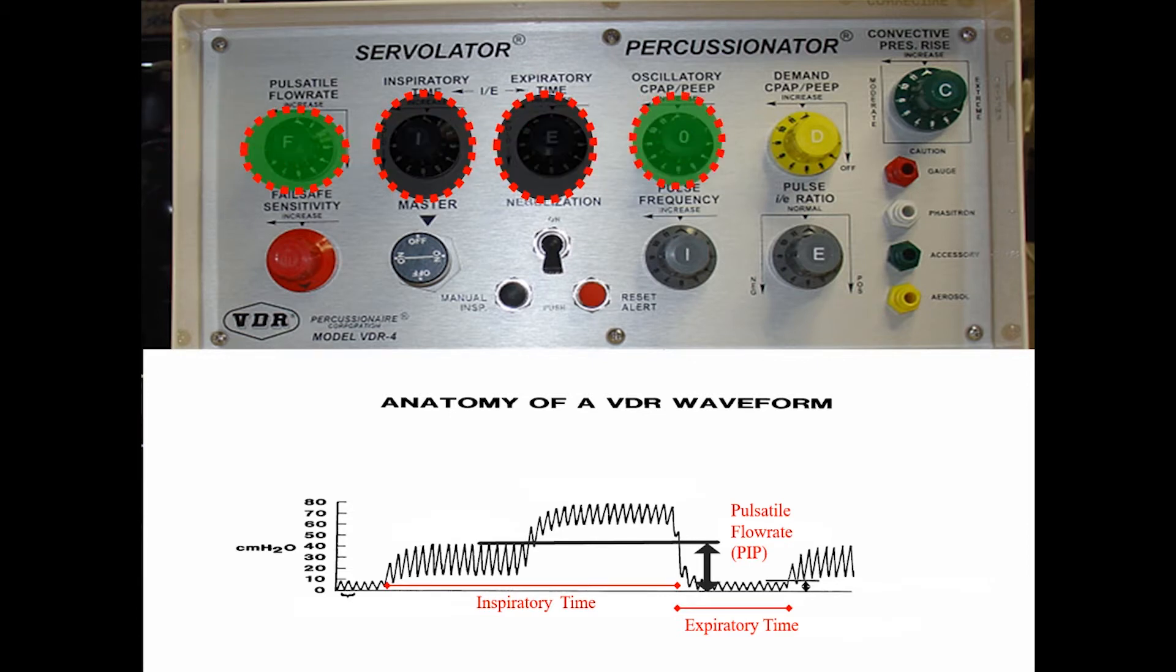My next control is called the demand CPAP or PEEP. It delivers continuous flow through both the inspiratory and the expiratory cycle for patients that are over-breathing the ventilator that you might be able to make more comfortable by giving them a little bit more flow.